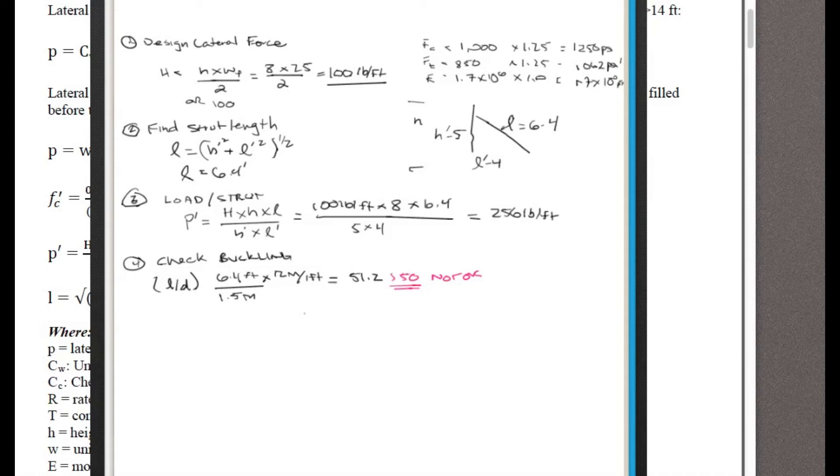So if we put a brace here at the mid-span, that decreases the unsupported length of this in half. So instead of being 6.4 in our slenderness ratio, we use 3.2. So now our new L over D, I'll put here, use mid-span brace. So our new L over D is going to be, no longer 6.4, but 3.2, multiplied by 12 inches per foot, divided by 1.5 inches. And we get half of what it was, or 25.6, which is less than 50. So we're okay. So we can use one mid-span brace and be okay.